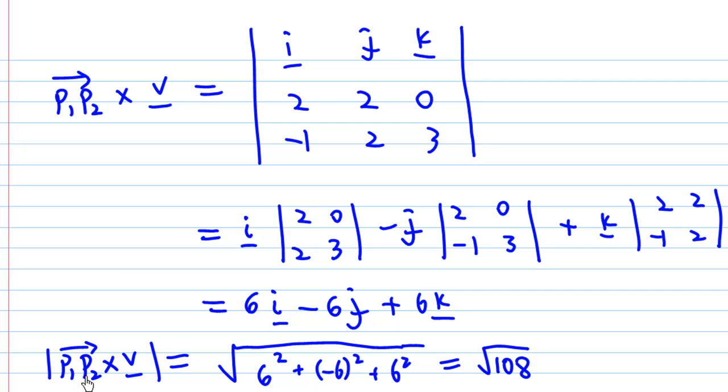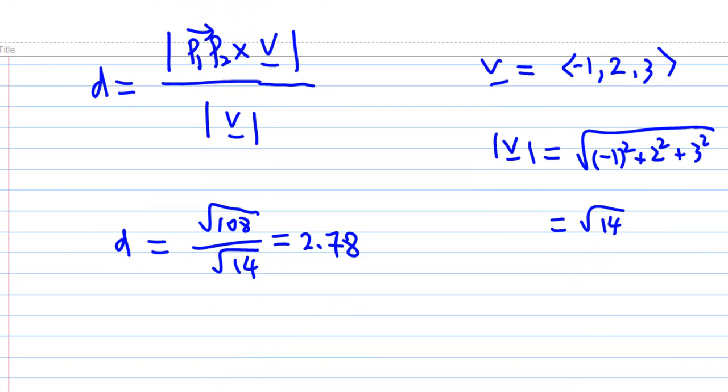So the length of P1P2 cross V is equal to the square root of 108. Then we find V is (-1, 2, 3), so the length of V is the square root of 14.